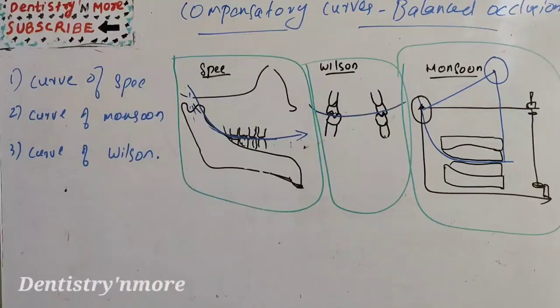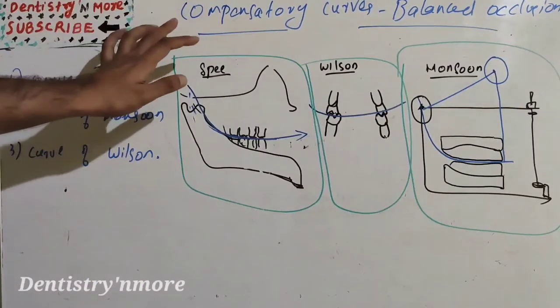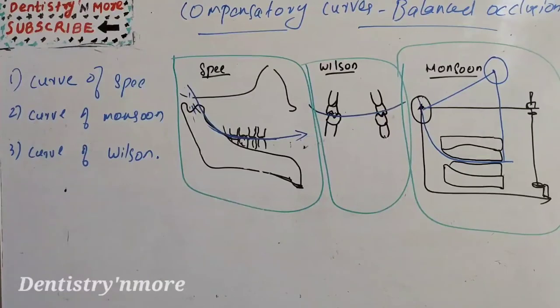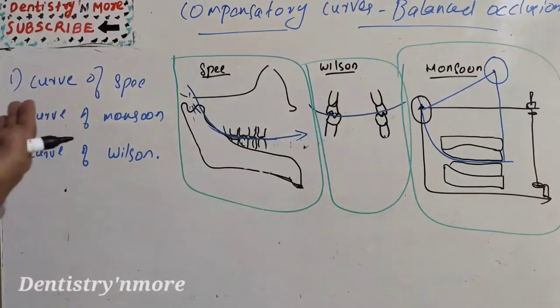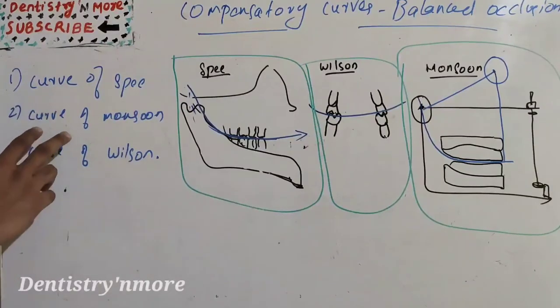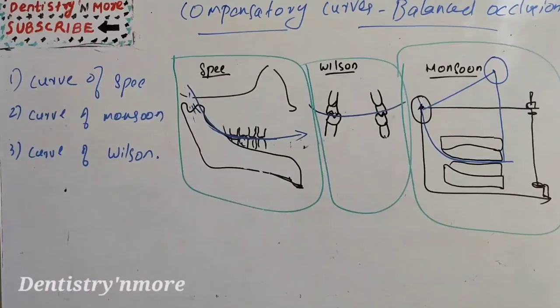Hello everyone, welcome back to another session in Dentistry and More. Today's topic in prosthodontics is compensatory curves. These are the curves where we keep our artificial teeth so as to achieve a balanced occlusion. We have three curves basically: curve of Spee, curve of Monsoon, and curve of Wilson.